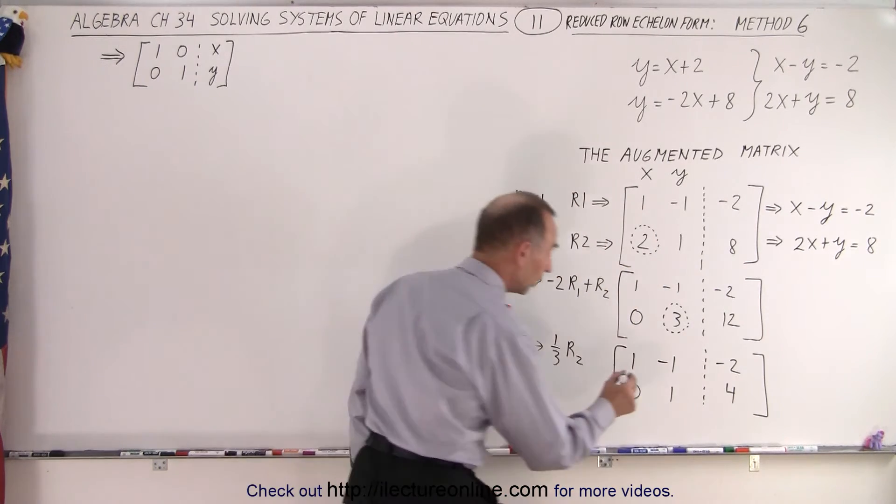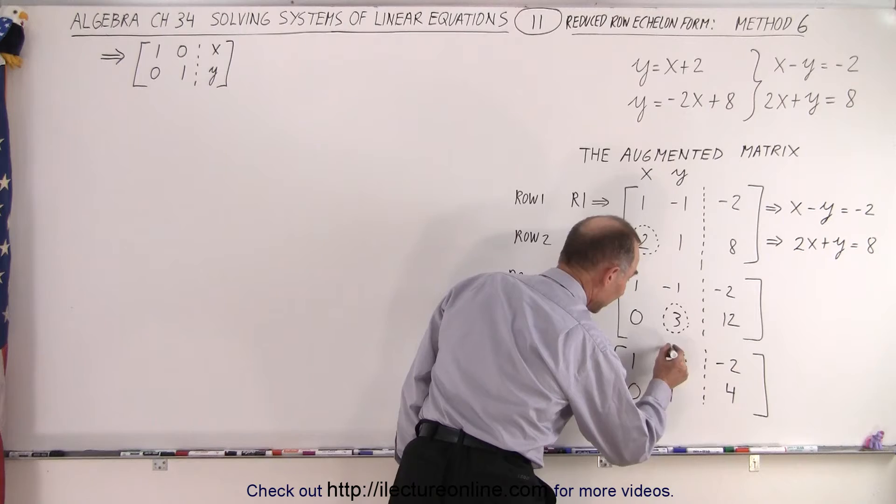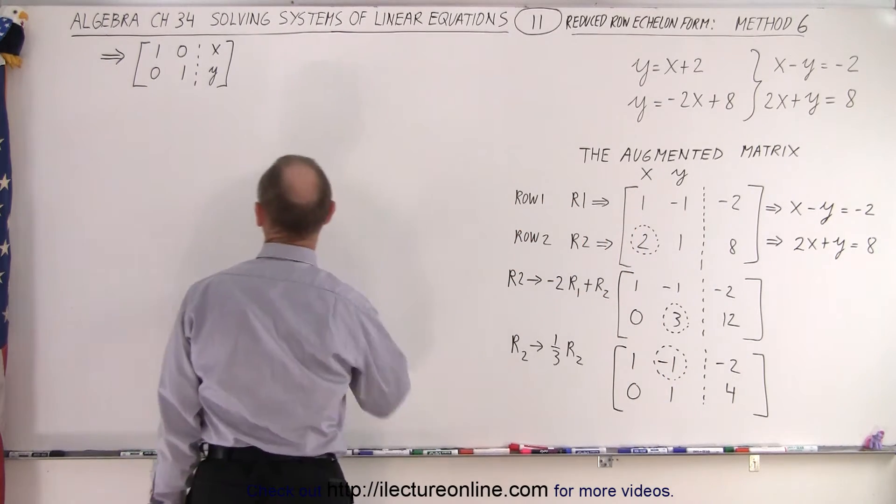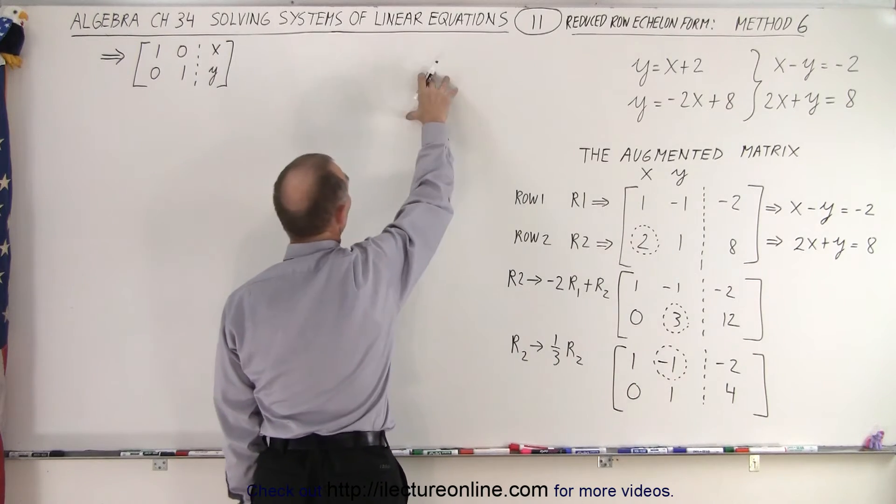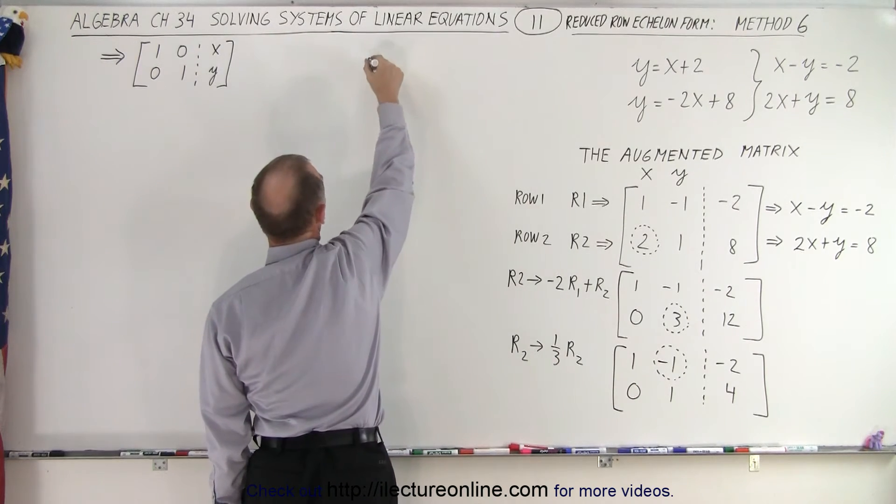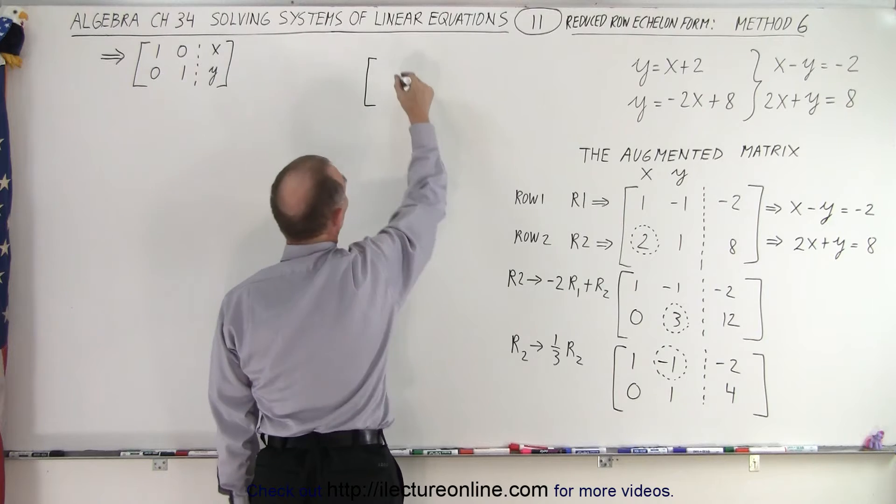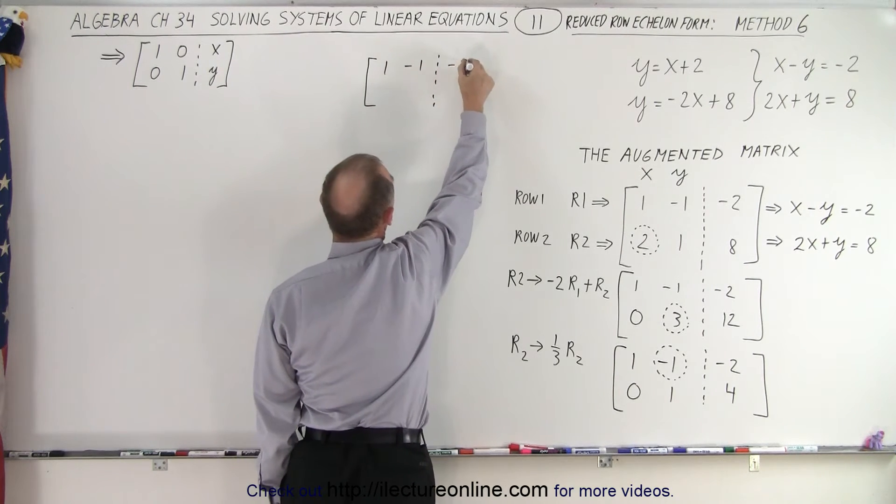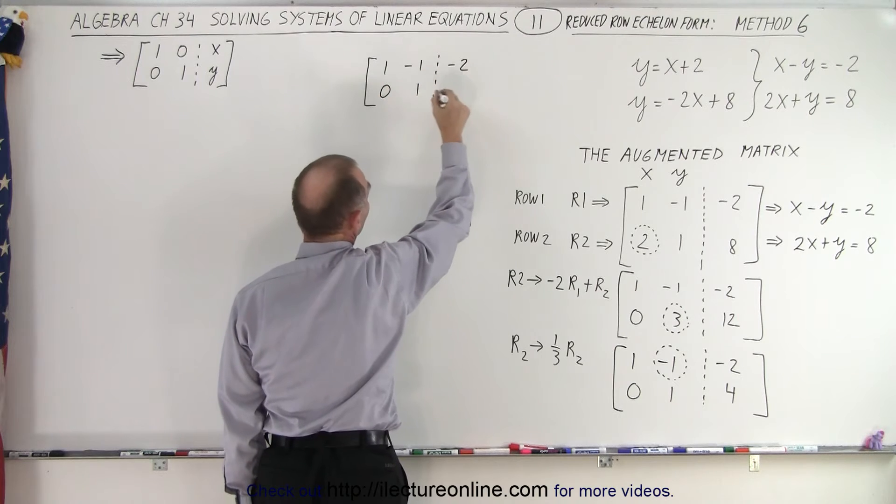Now there's only one thing left to do. We need to take this and turn that into a 0 because we want to make it look like this. So I'm going to take this and rewrite it over here. My augmented matrix looks as follows: I have 1, negative 1, dashed line, negative 2, 0, 1, and 4.